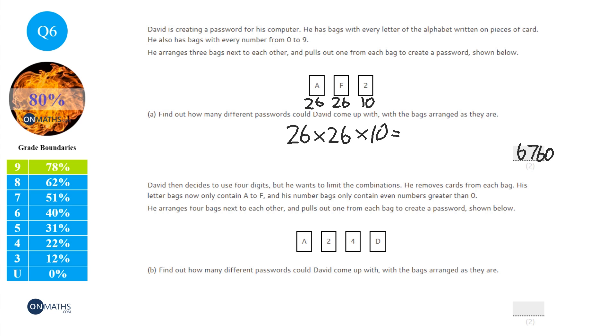This next one, so he wants to use 4 digits but limit the combinations. So we've just got to read the question. His letter bags now contain the letters A to F so that's A, B, C, D, E, F which is 6. So these both will contain 6. And only contain even numbers greater than 0. Now these are the same bags as before so we only had the numbers from 0 to 9 before. So the even numbers that are greater than 0, so that's 2, 4, 6, 8. So there's 4 combinations. So there's 4 numbers those can be. And so find out how many different passwords if they're arranged like this. So 6 times 4 times 4 times 6. So 6 times 4 times 4 times 6 which is 576.